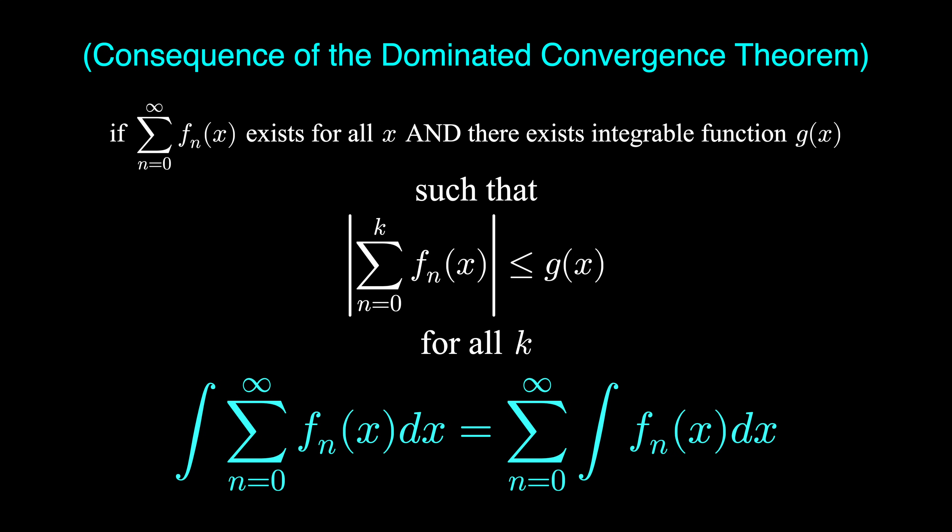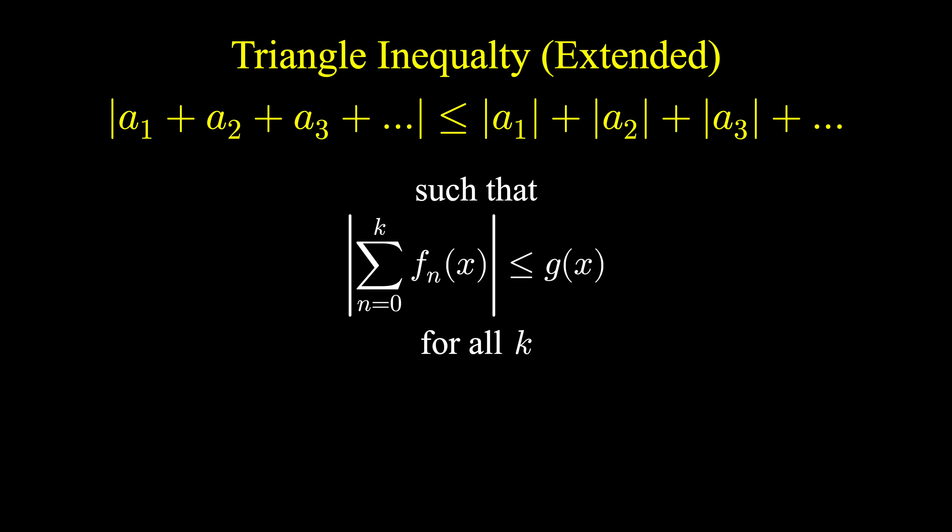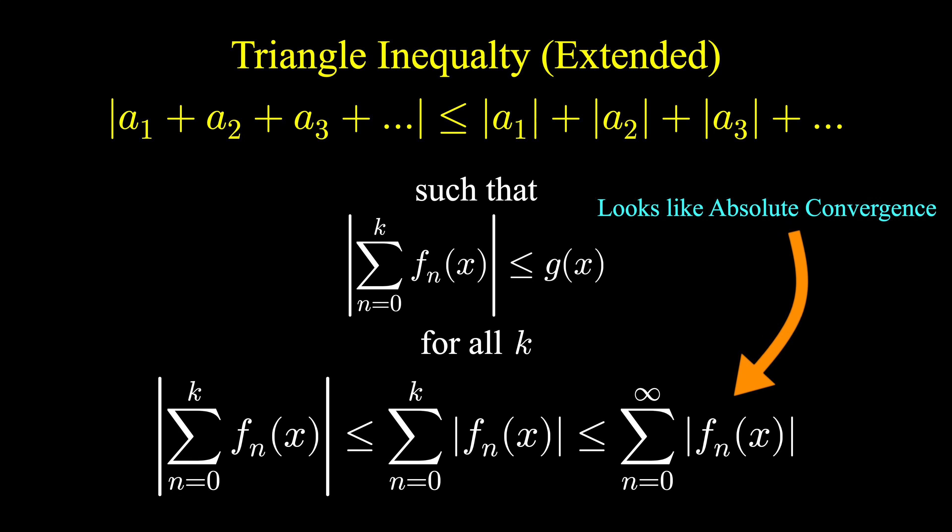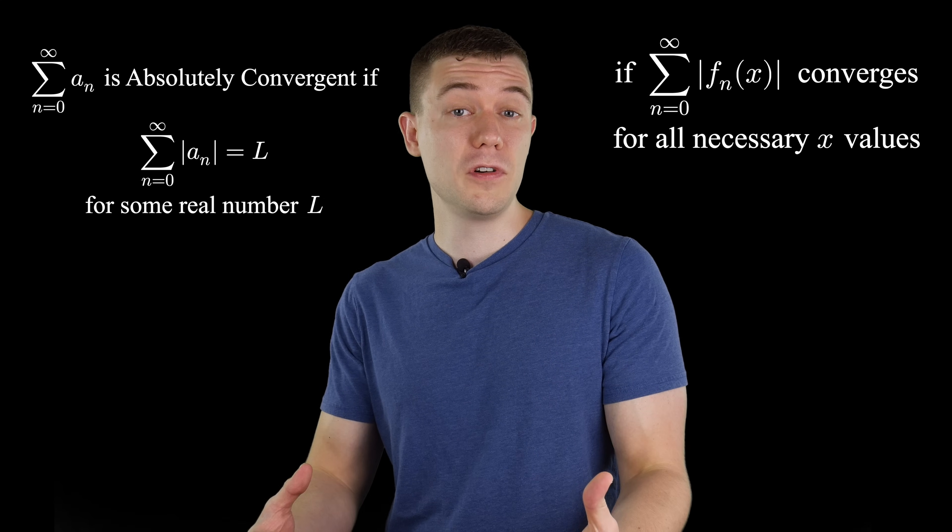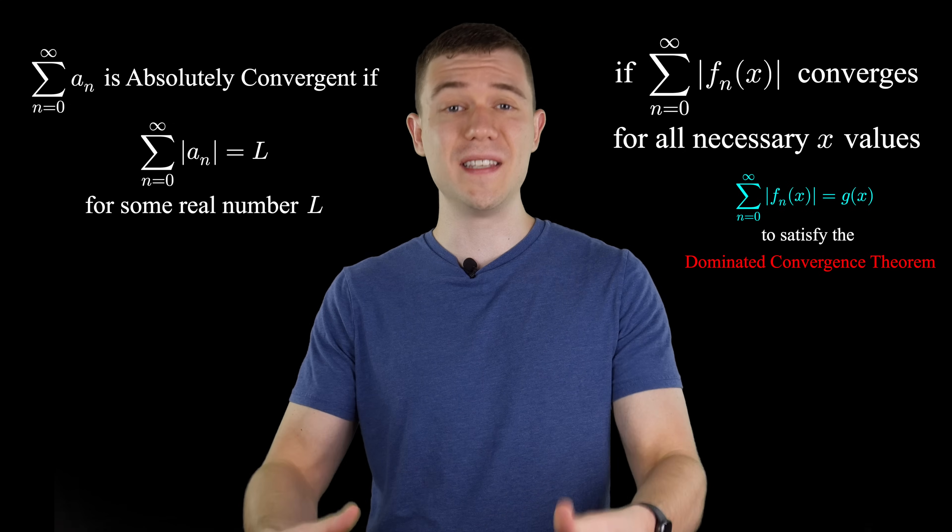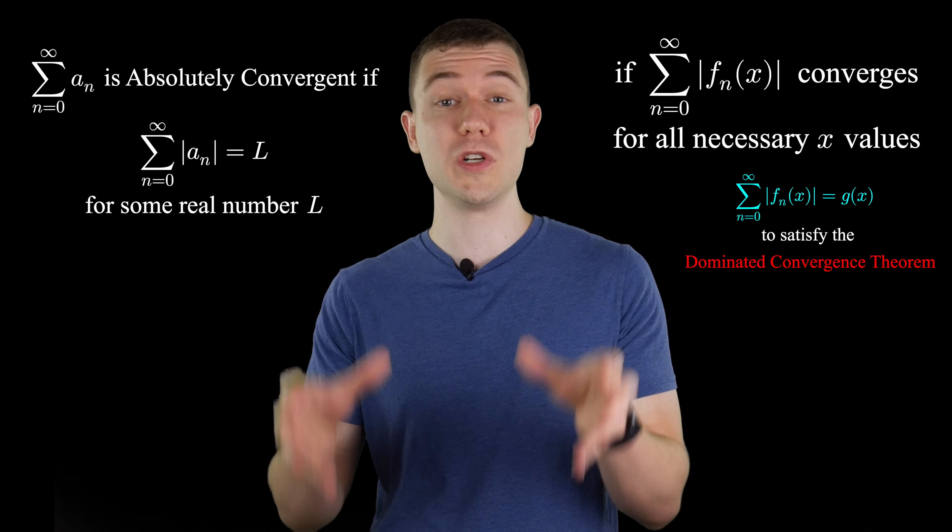The real trick is how are you going to find a g of x you know always works? This will make students of real analysis happy when I break out the triangle inequality and extend it out very far. Essentially the absolute value of a sum is less than or equal to the sum of absolute values, and we can apply it in this case. And this looks awfully familiar for calculus students to absolute convergence. A sum absolutely converges when we take that sum of absolute values. So if our sum absolutely converges, we take that to be our g of x and use this as the justification for switching those summation symbols.